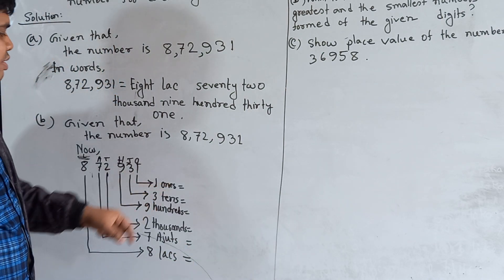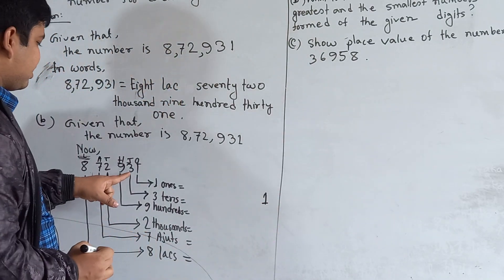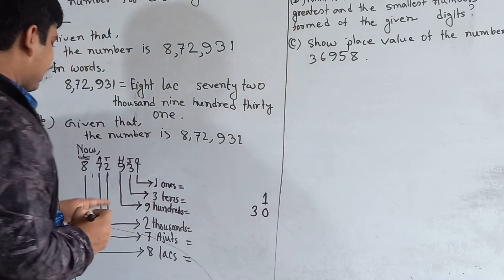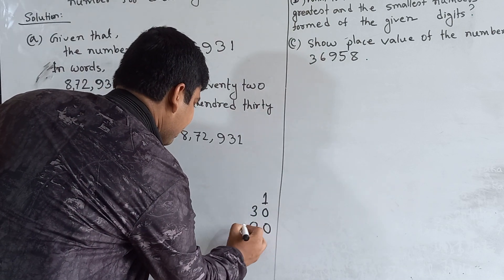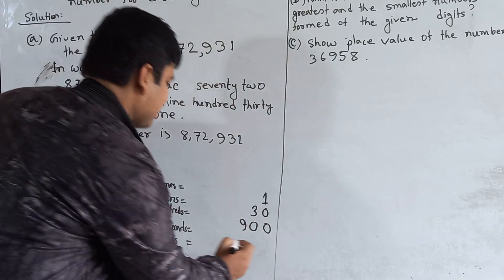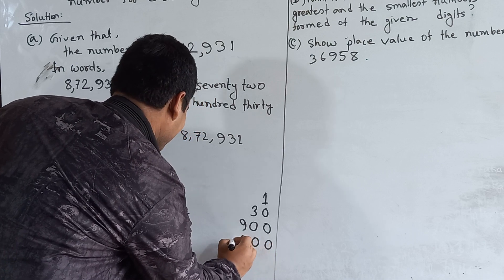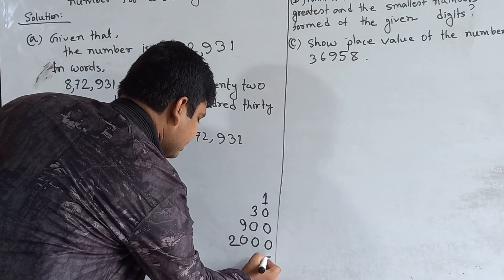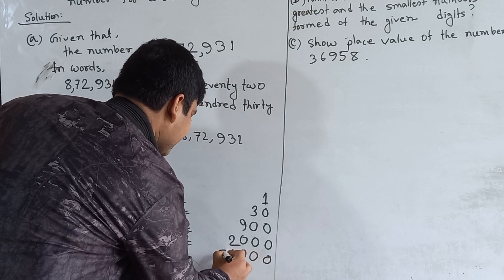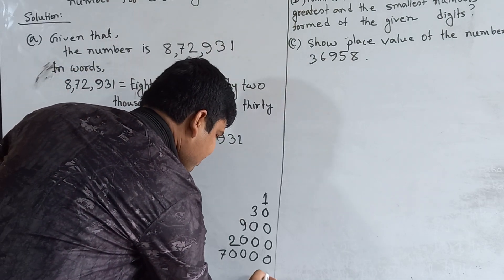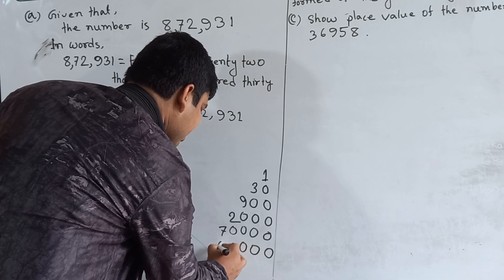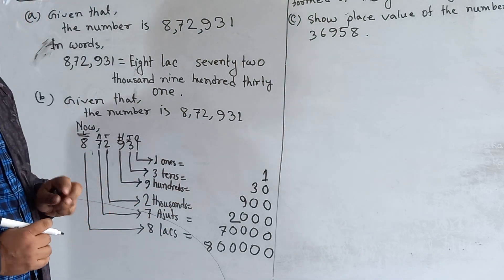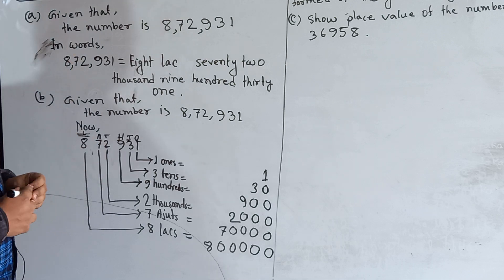Now we fill in the values: one ones equals 1. Three tens equals 30. Nine hundreds equals 900. Two thousands equals 2,000. Seven ten-thousands equals 70,000. Eight lakhs equals 8,00,000. This is the place value for each digit of the given number, and this completes CBQ number 1. I hope you have understood how to solve this. When you appear at the examination, your question paper will consist of CBQs just like this.